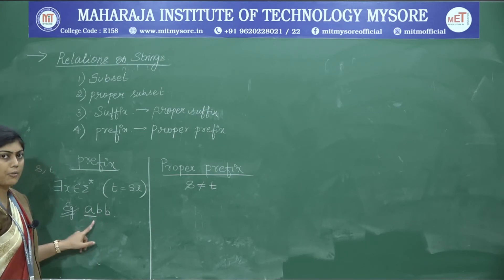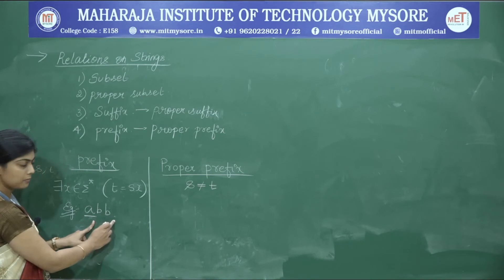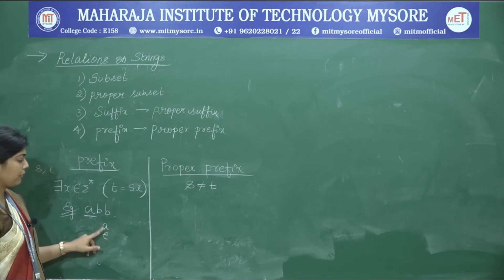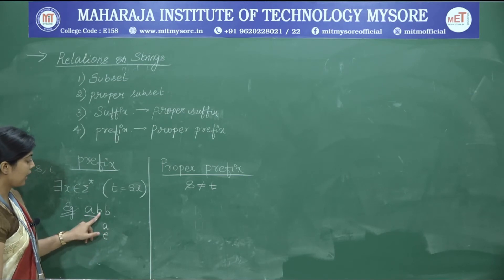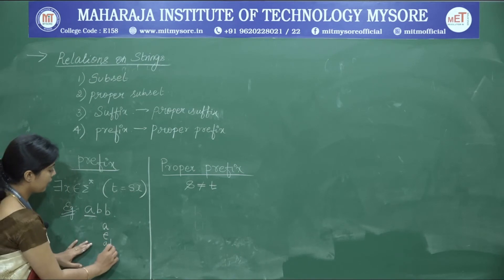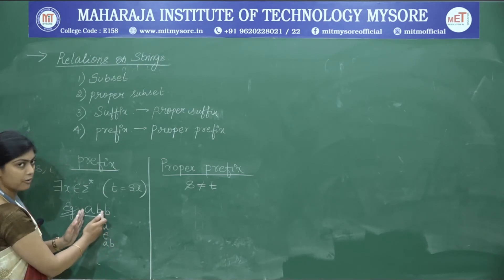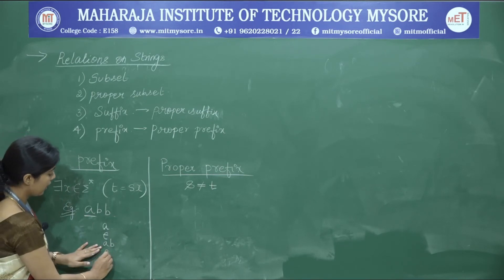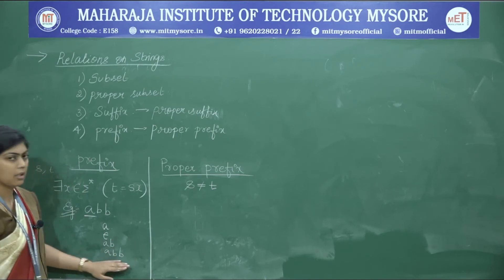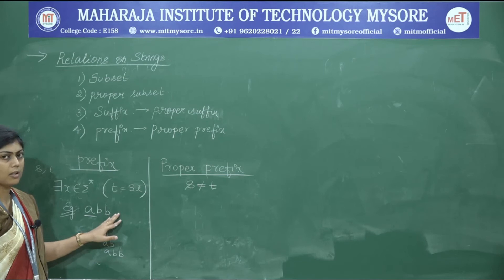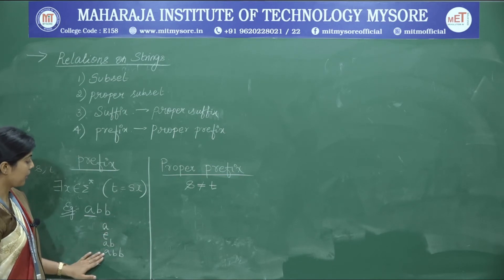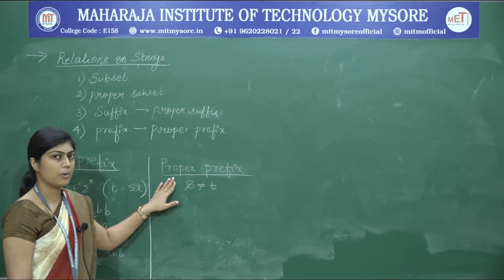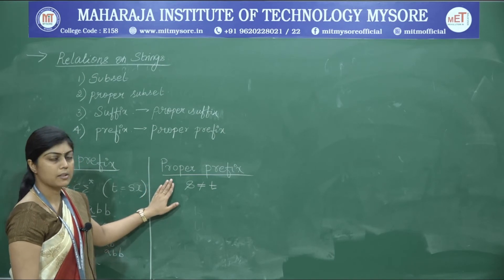The prefixes of 'abb' are: epsilon (imagining epsilon at the start), 'a', 'ab' (the part appearing before the last 'b'), and 'abb' (imagining epsilon at the end). So these are the different prefixes of 'abb'.